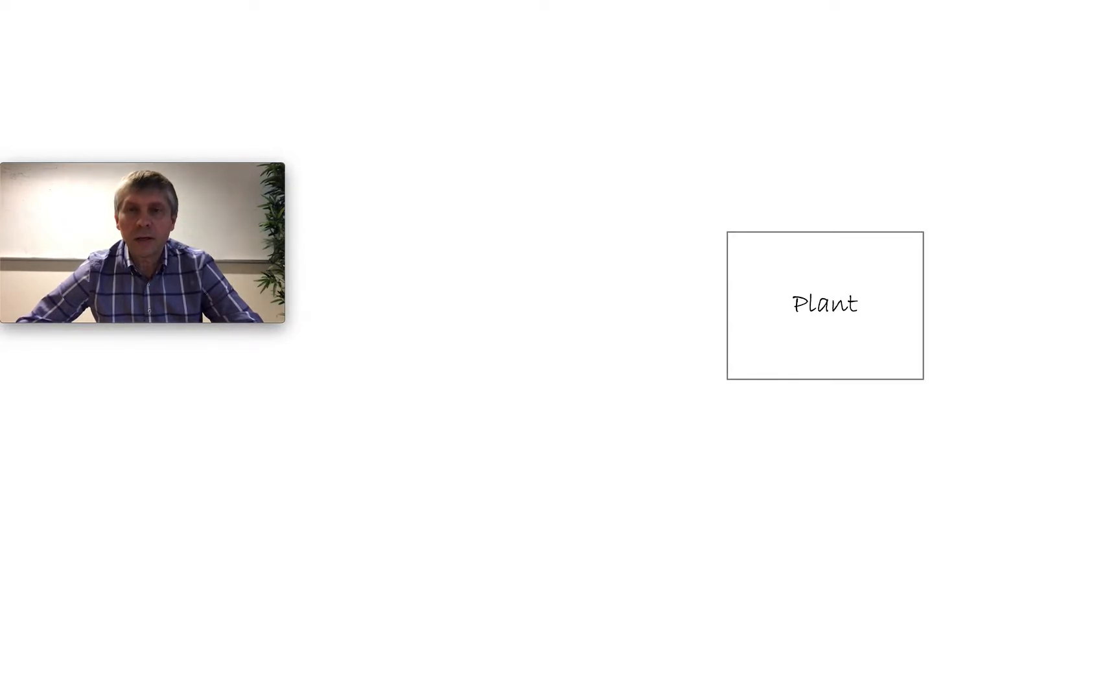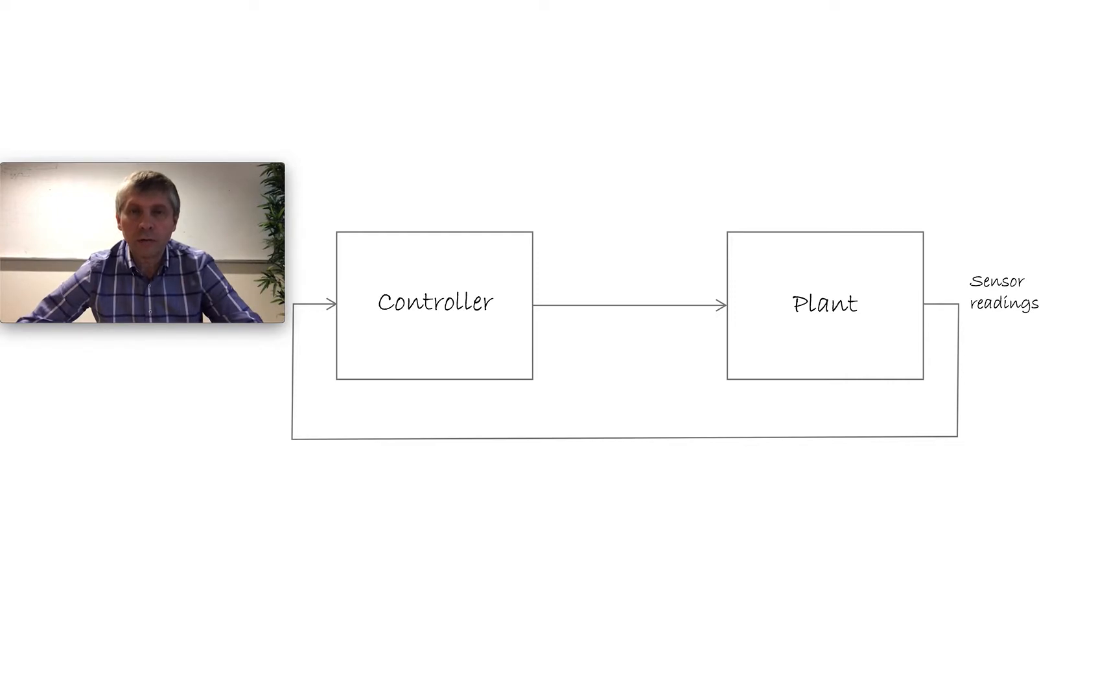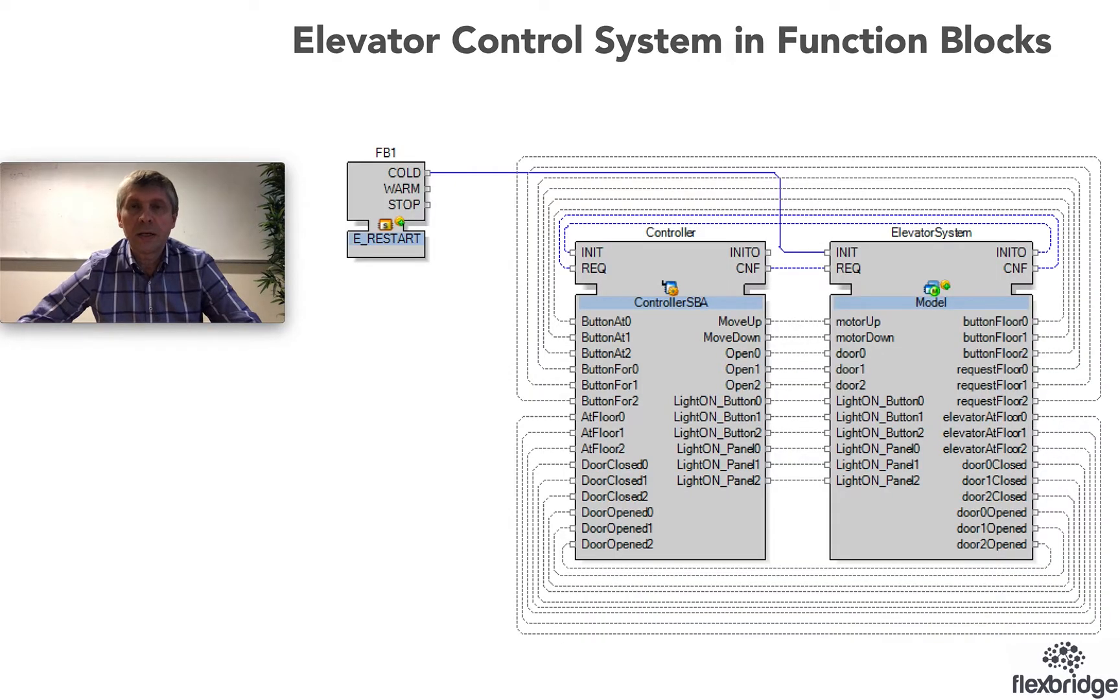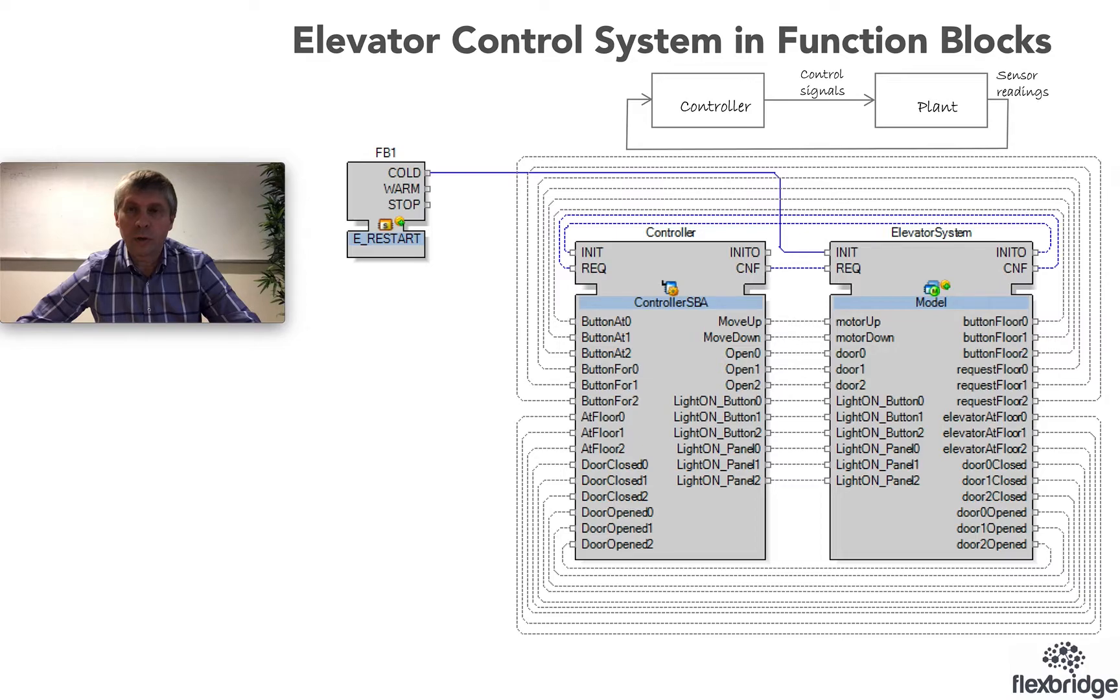Let's remember how we usually design control systems. Control systems consist of a plant and a controller. We draw a block diagram and that block diagram connects plant and controller. From the plant we have sensor readings that go to the controller, and from the controller we have control signals that go to the plant. That's the very basic and classic way of describing control systems. In IEC 61499 we follow exactly the same approach. On the top level of our application we can represent it as two blocks: one corresponding to the plant and another corresponding to the controller, exactly like in our abstract block diagram.